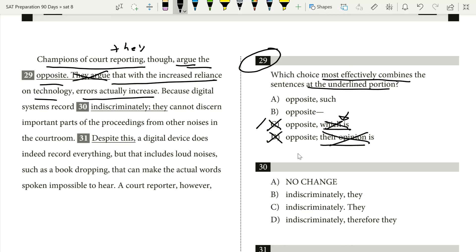Next I look at A and I look at B. I see in B, I use a dash after the word opposite. And then I say exactly what it is explaining, right? Champions of court reporting though argue the opposite. Now I'm going to explain what that opposite is: that with the increased reliance on technology, errors actually increase. So in that case, I'd be using an em dash and then providing an explanatory relationship, which is perfectly grammatically correct. So I know B will be my correct answer.